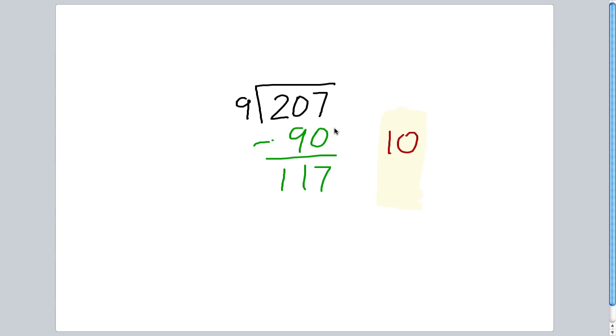Now, I look at 117 and I recognize that I could take out 10 more 9's. I know that 10 9's gives me another 90. Let's take that 90 out of 117 which leaves us 27.